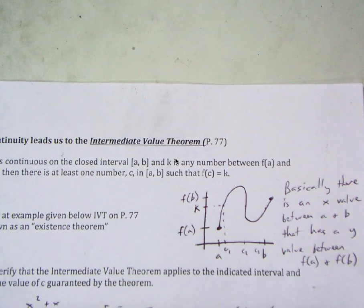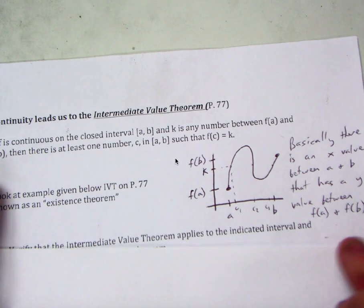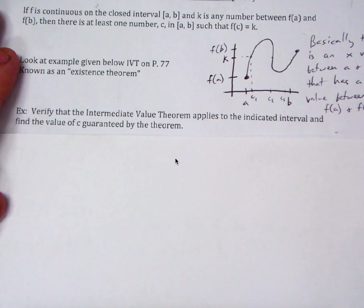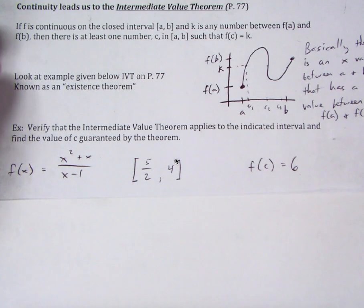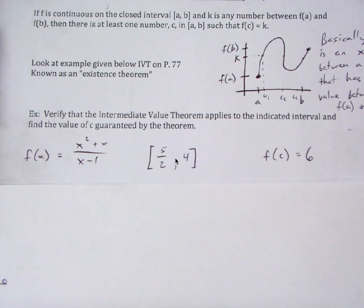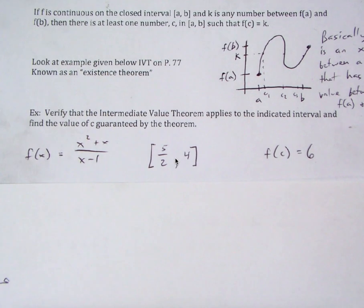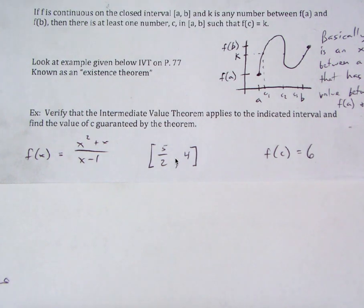So let's do an example, and then you guys can do the around-the-room practice. It says: verify the Intermediate Value Theorem applies to the indicated interval and find the value of C guaranteed by the theorem. Here's all the information given to you — go ahead and write this out, and then we will go to work.